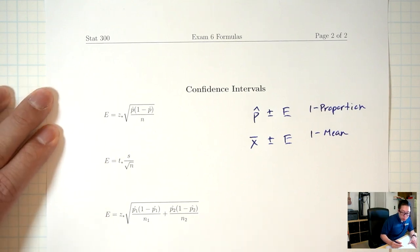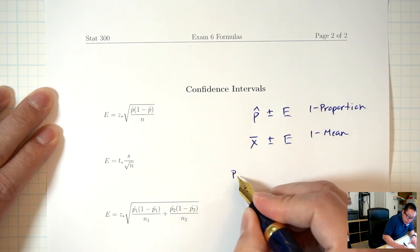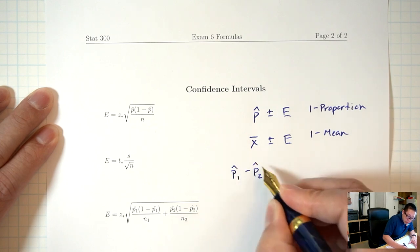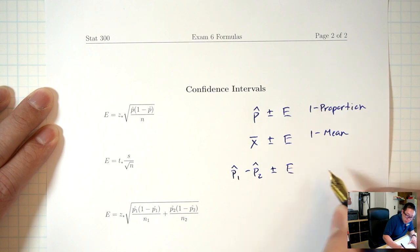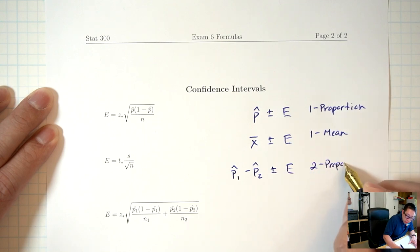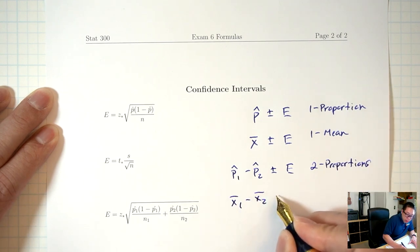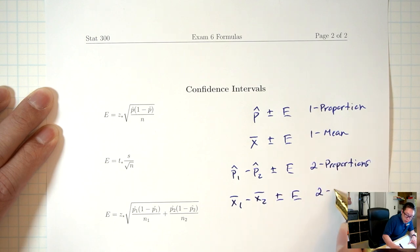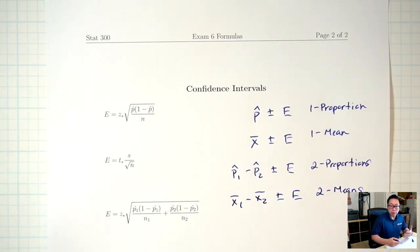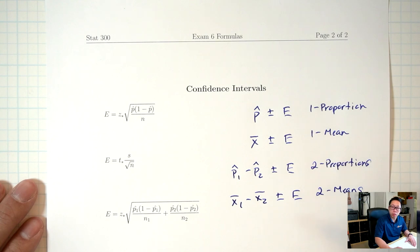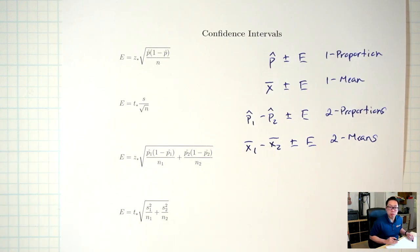For the two proportion situation, the end product is going to look like p-1-hat minus p-2-hat plus or minus the margin of error. The two means is going to be x-1-bar minus x-2-bar plus or minus the margin of error. The question is how do you find the margin of error — it's different in each situation. In general, z-stars are for proportions and t-stars are for means.